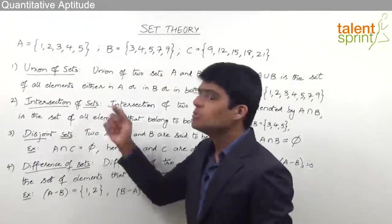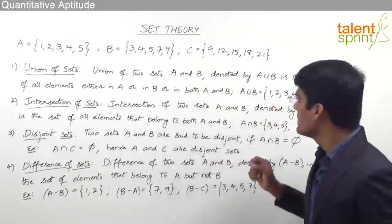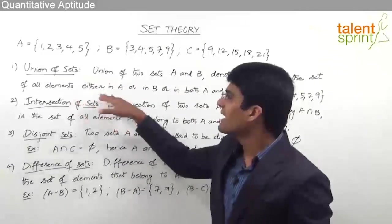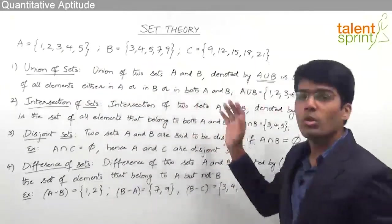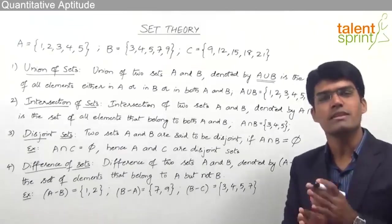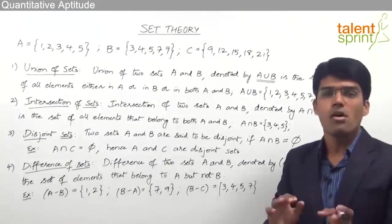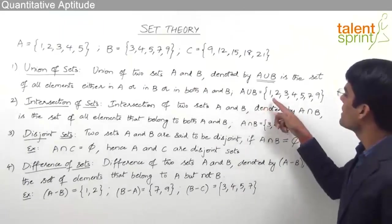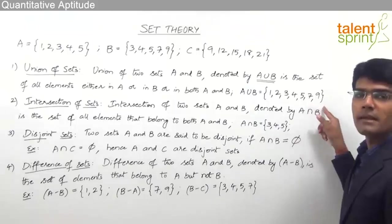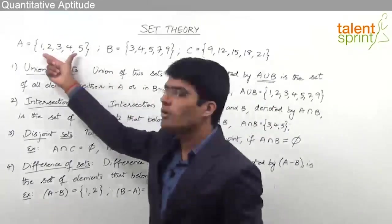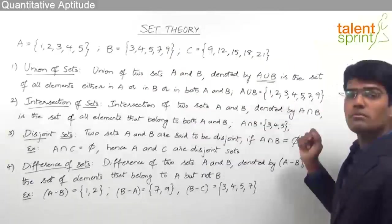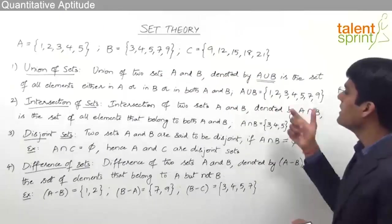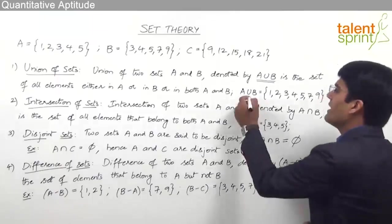The first operation is the union of sets. The union of two sets A and B, denoted by A ∪ B, is the set of all elements that are either in A or in B or in both A and B. For example, A ∪ B equals {1, 2, 3, 4, 5, 7, 9} because 1, 2, 3, 4, 5 belong to A and 3, 4, 5, 7, 9 belong to B. The collection of all elements belonging to either A or B or both is referred to as A union B.